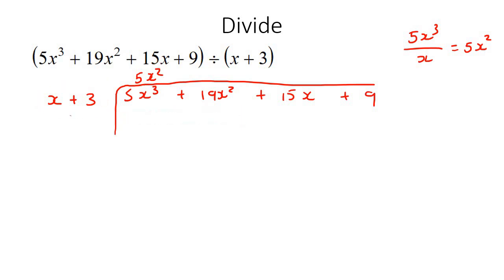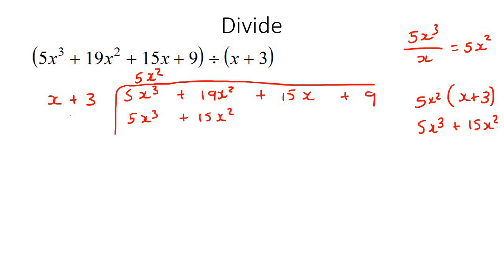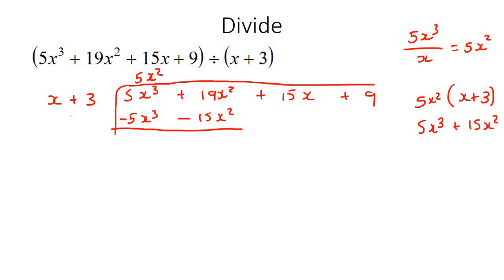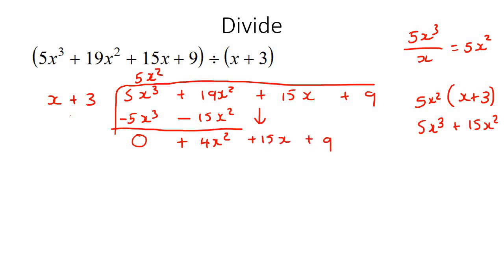So we're multiplying 5x squared by x plus 3, and that's going to give us 5x³ plus 15x squared. Now here's a little trick: change the signs of these — if it's positive, make it negative. Then you just add these parts together. So 5 minus 5 is 0, and 19 minus 15 is 4. You can just carry the rest down like that.